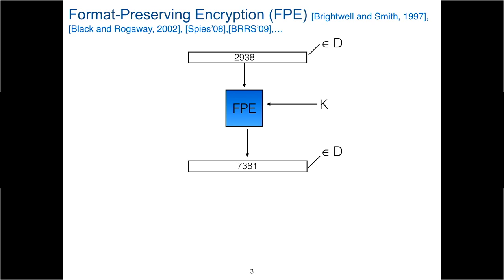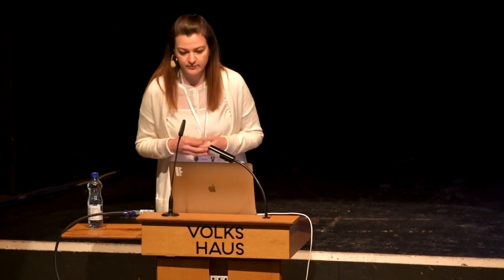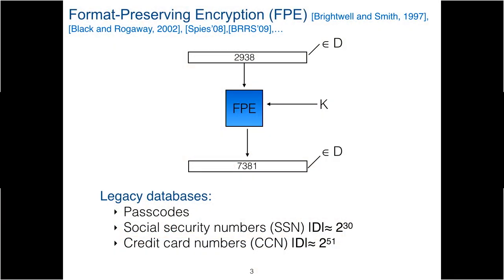In order to relax this rigidity, a new notion called format-preserving encryption has been introduced and has taken place in applied cryptography recently. FPE is basically a cipher that encrypts a message from a general domain D into the same domain D — a keyed permutation defined on more general domains. These general domains typically are passcodes, social security numbers, or credit card numbers in practice, and they are not necessarily bit strings of fixed lengths. Importantly, FPE is designed to work on small domains of messages — for SSN, it's just 30 bits of message.